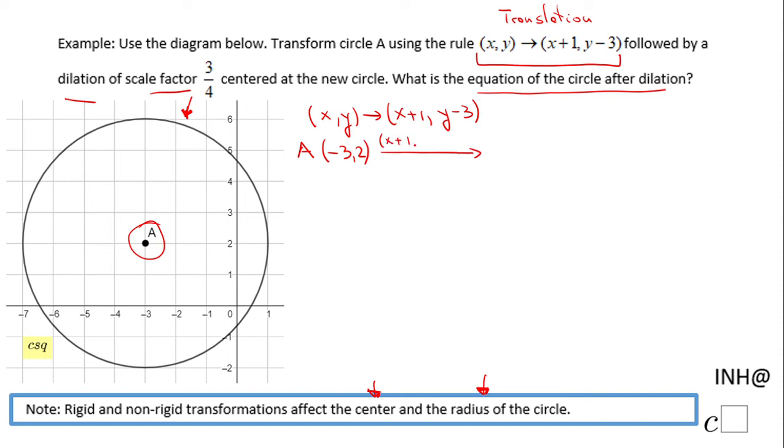x plus 1 and y minus 3, the new center will be -3 + 1, and that will be -2, and positive 2 minus 3, that will be -1. That will be right here.